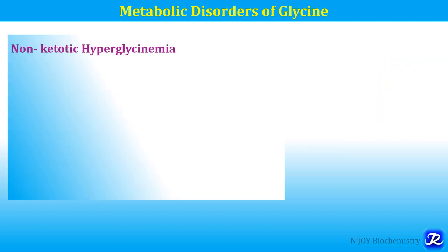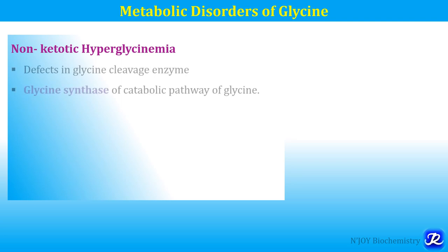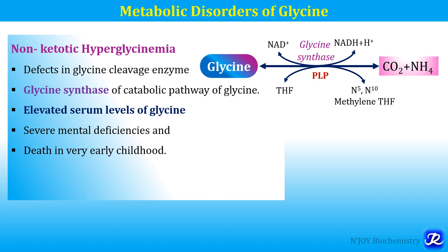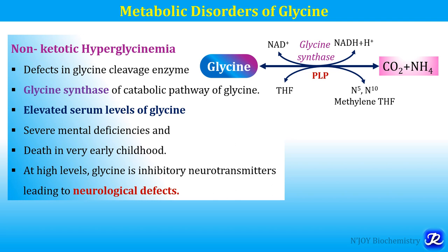Non-ketotic hyperglycinemia is also a metabolic disorder of glycine. It is due to a defect in the glycine cleavage enzyme, that is glycine synthase, of the catabolic pathway of glycine. Since glycine is catabolized to carbon dioxide and ammonia with the help of glycine synthase, a defective enzyme leads to increased concentration of glycine. Elevated serum glycine levels cause severe mental deficiencies occurring in very early childhood, and high glycine levels lead to neurological defects because glycine is an inhibitory neurotransmitter.